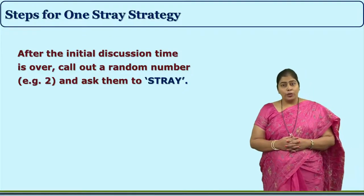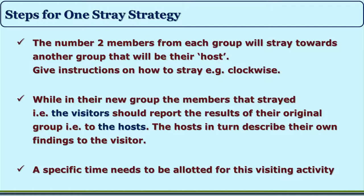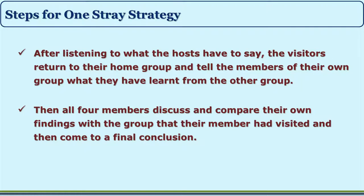The student whose number is called out is asked to stray. For example, the number 2 members from each group will stray towards another group — their host — following a direction such as clockwise. While in their new group, the visitors report the results of their original group to the host. The host in turn describes their own findings to the visitor. A specific time is allotted for this visiting activity, after which the visitors return to their home group and share what they learned.